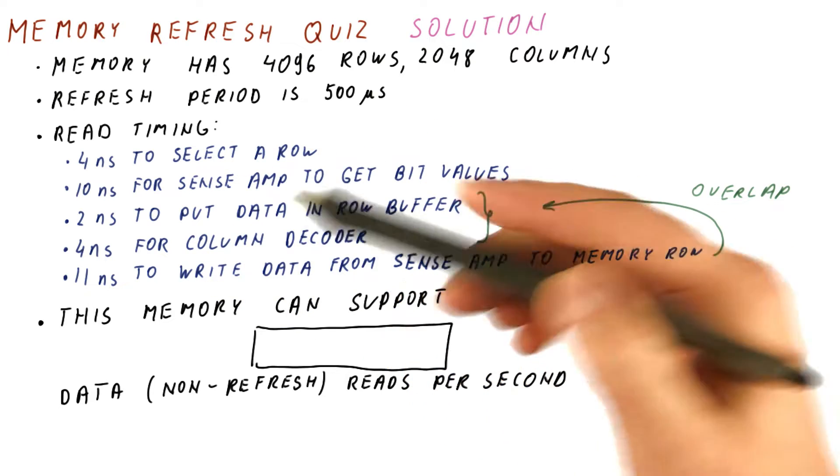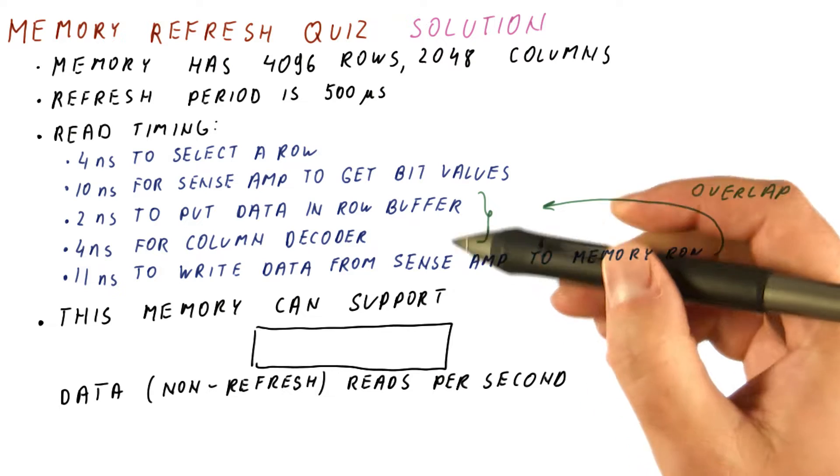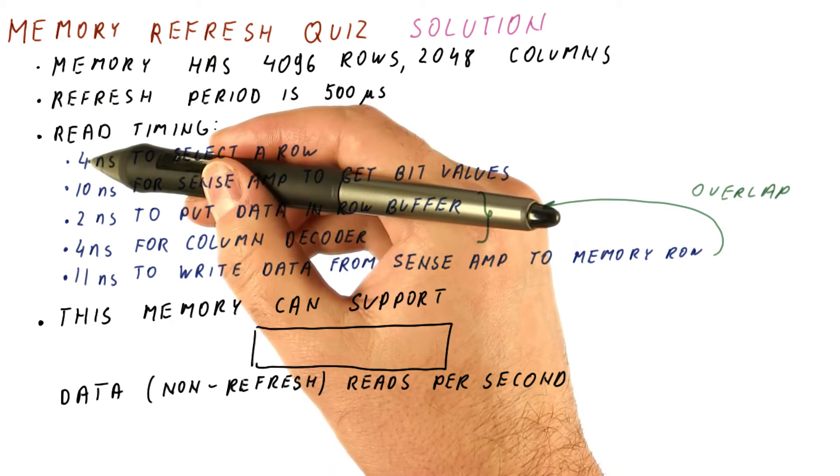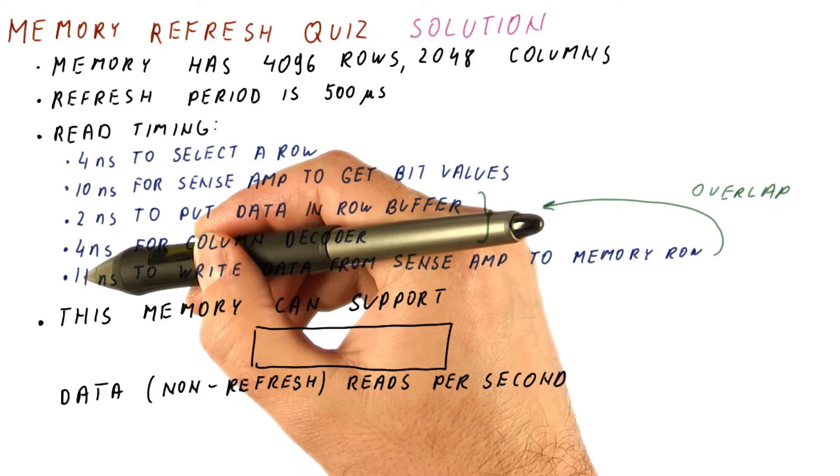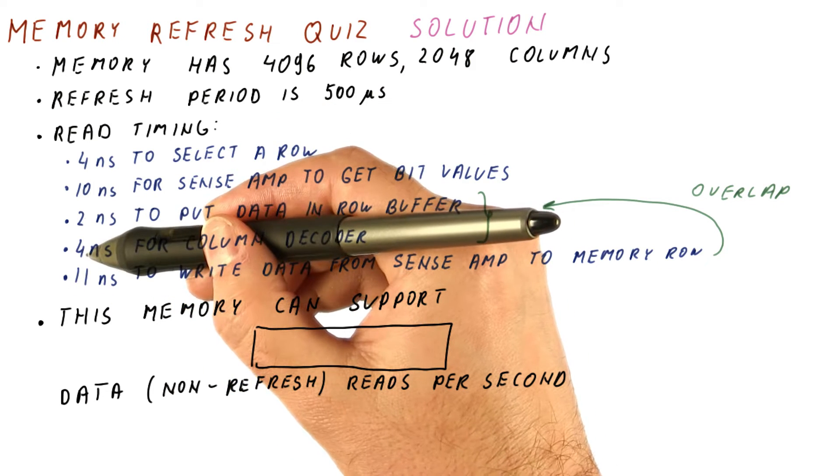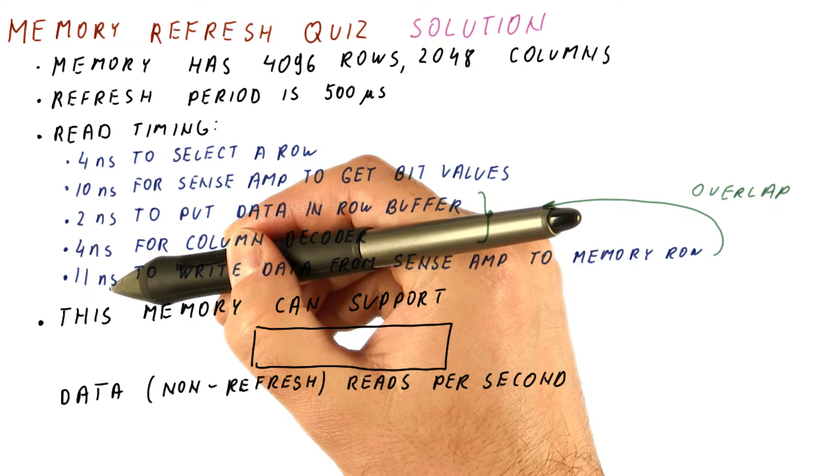And this is a read timing where these two steps and this one overlap. So basically it takes us 4 plus 10 plus either 11 or 2 plus 4 nanoseconds before we complete one read and can proceed with the next one.